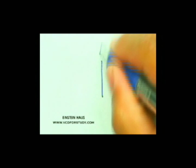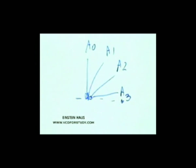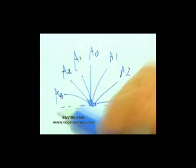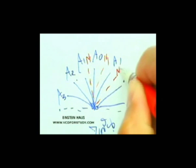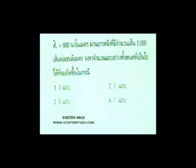เวลาวาดก็คือมี A0, A1, A2, A3 นะครับ และอย่าลืมฝั่งซ้ายก็ต้องมีด้วย มี A1, A2, A3 รวมแล้วนับได้ 1, 2, 3, 4, 5, 6, 7 เส้น แถบสว่างจะเกิดขึ้นทั้งสิ้น 7 เส้น คือ N1, N1, N2, N2, N3, N3 และ N0 นะครับ